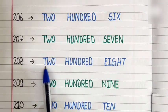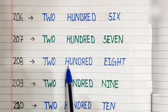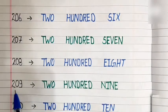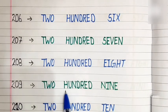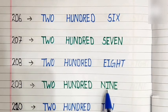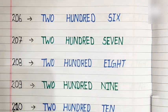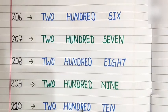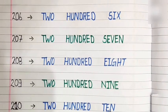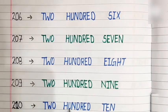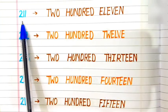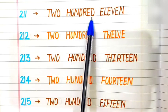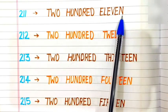208: T-W-O H-U-N-D-R-E-D E-I-G-H-T. 208. 209: T-W-O H-U-N-D-R-E-D N-I-N-E. 209. 210: T-W-O H-U-N-D-R-E-D T-E-N. 210. 211: T-W-O H-U-N-D-R-E-D E-L-E-V-E-N. 211.